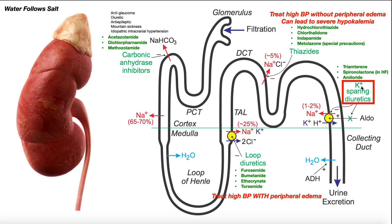When we use a potassium-sparing diuretic like spironolactone — which is often used in heart failure — it inhibits this transporter, preventing sodium reabsorption so sodium remains in the tubules, but it also inhibits potassium secretion. By doing this, potassium-sparing diuretics allow potassium to remain in the blood, reducing the degree of potassium loss caused by loop diuretics and thiazides. So the individual won't be as hypokalemic as they might be without a potassium-sparing diuretic.